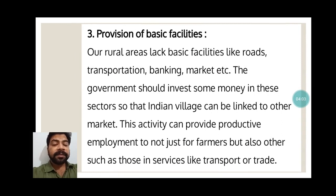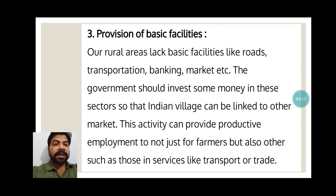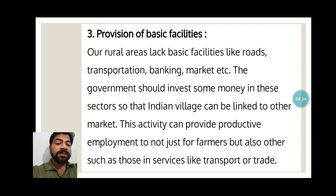With access to cheap credit, farmers can utilize and invest that amount in other activities. The next point is provision of basic facilities. Our rural areas lack basic facilities like roads, transportation, banking, and markets. The government should invest money in these sectors so that Indian villages can be linked to other markets. If you recall the Palampur story, Palampur was a developed village because it was well connected by roads and active transportation services.